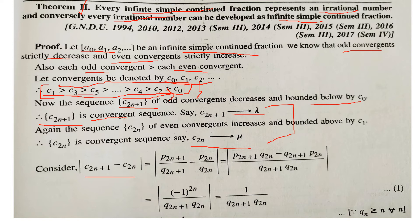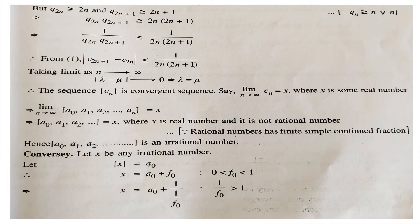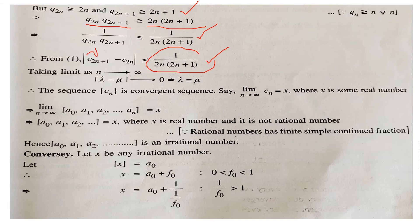We take the difference of the two convergents. We know that c_{2n+1} = p_{2n+1}/q_{2n+1}, and on computing c_{2n+1} − c_{2n} we get (−1)^{2n} / (q_{2n} · q_{2n+1}). Since qₙ ≥ n, we have q_{2n} > 2n and q_{2n+1} > 2n+1, so their product grows without bound. Taking reciprocals, this difference tends to 0 as n → ∞, meaning λ = μ.